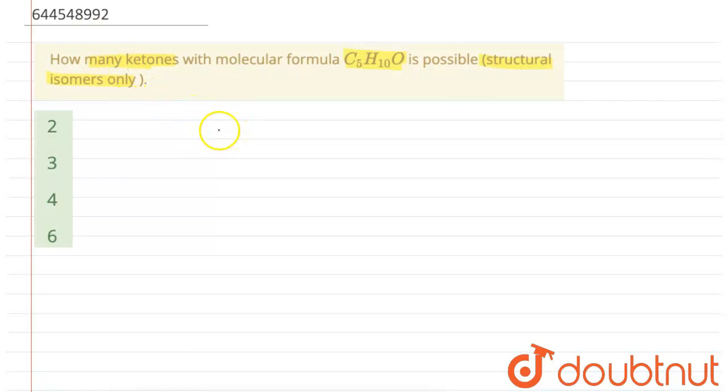Here we are provided with five carbon atoms, so this will be one, two, three, four, and five. As you know, ketones require two other bonds other than oxygen. We can put the first oxygen over here.